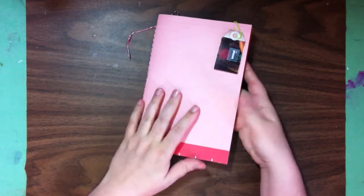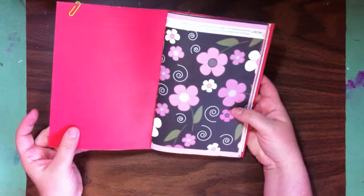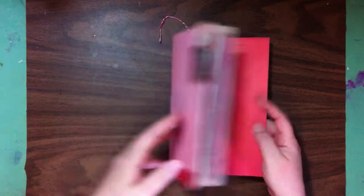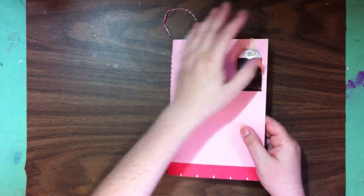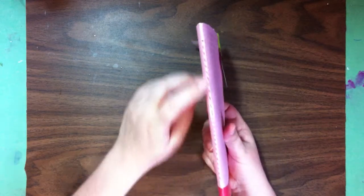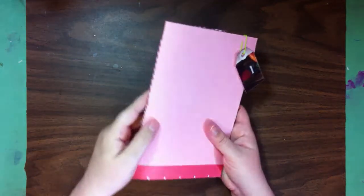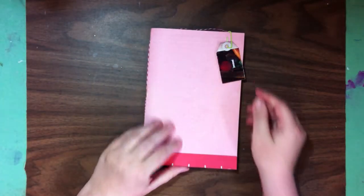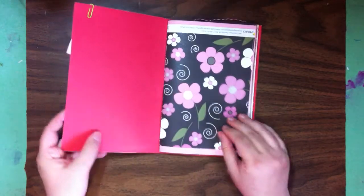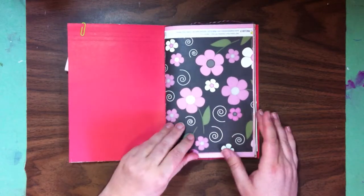So these journals are all made in the same manner. It's a file folder that has been made into a junk journal or a blank book, however you want to use it. And they've been bound, some of them have been bound with embroidery floss and others like this one with kitchen twine. And some of them are different than others, but they're all generally the same.